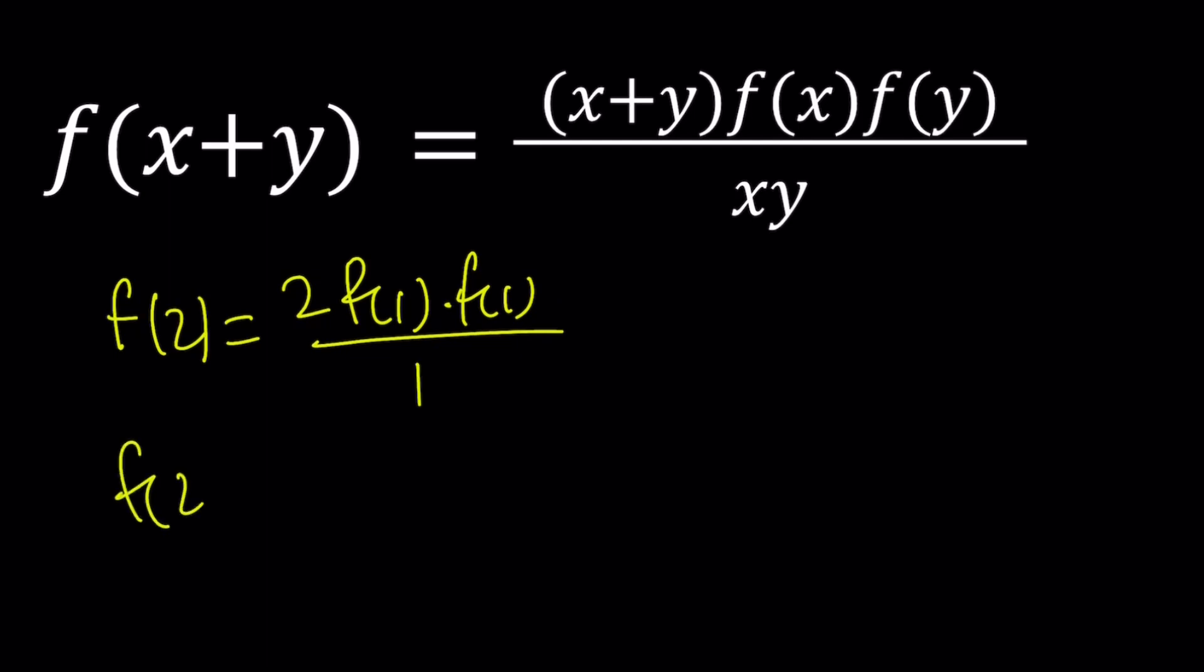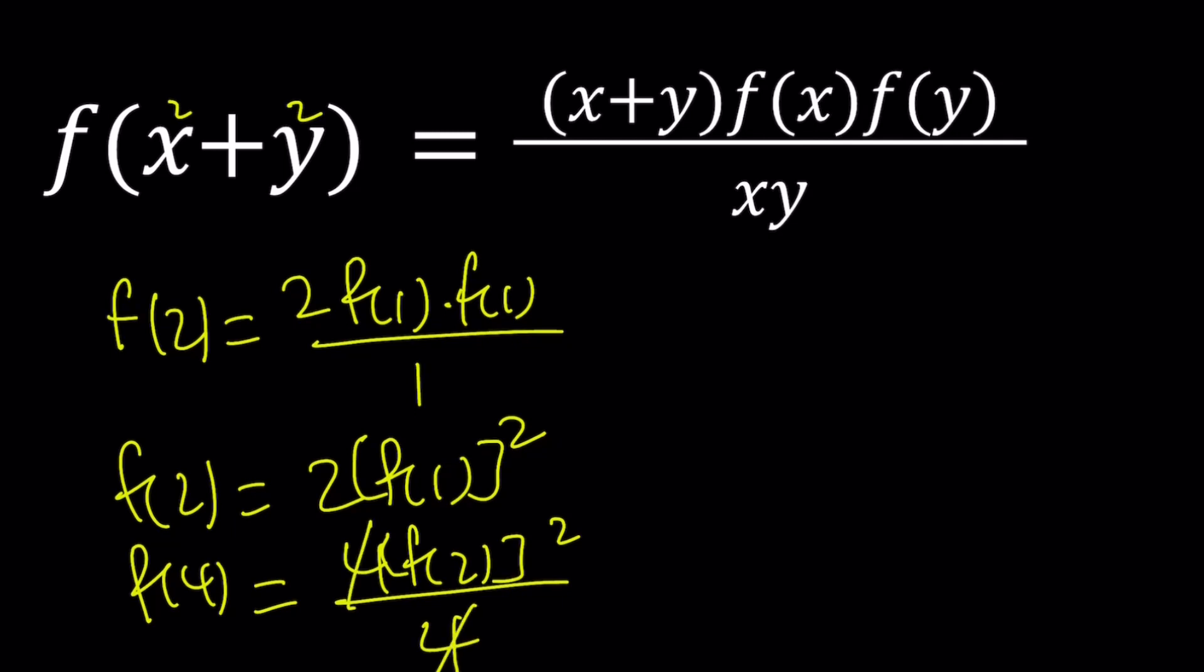f(2) equals 2 times f(1) squared. This may or may not be very meaningful at this point but this might help you find a pattern and generalize. If you do the same thing with 2 and 2 you're going to get f(4) equals 4 times f(2) squared, but then you would divide by 2 times 2 which is 4, and the 4 is going to cancel out.